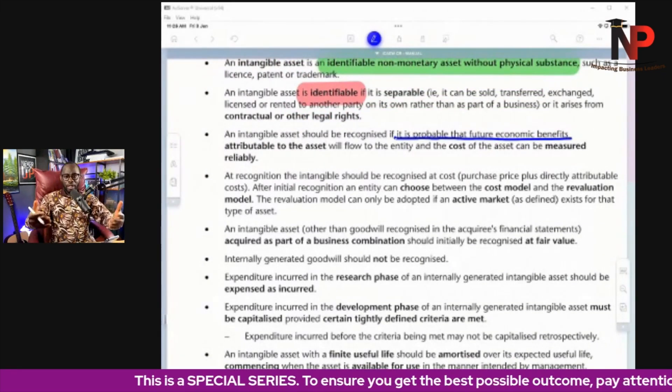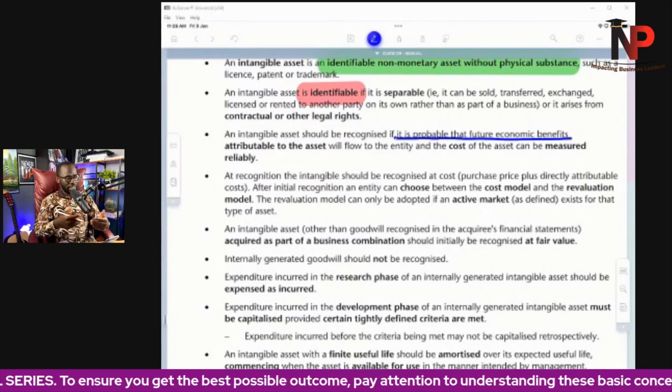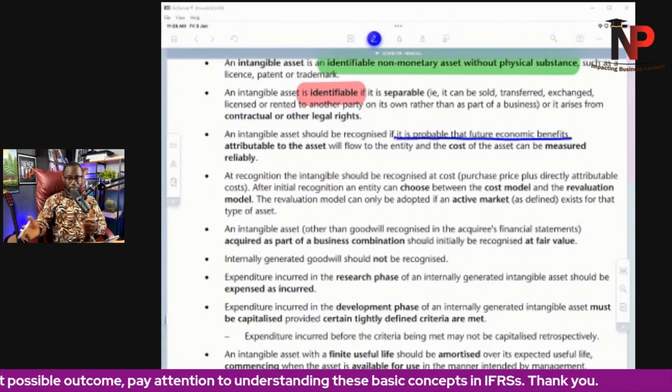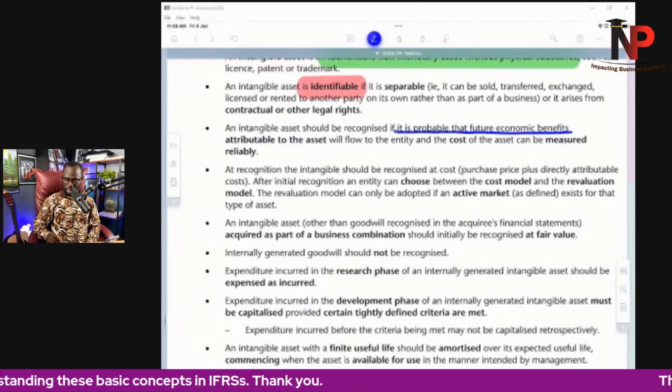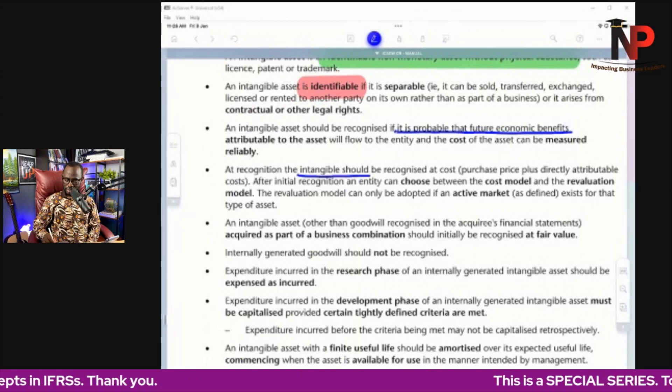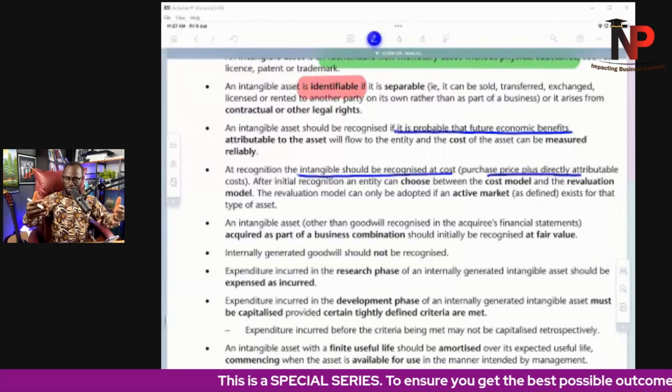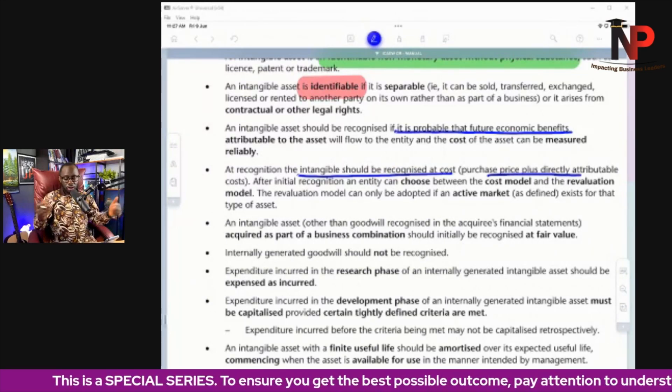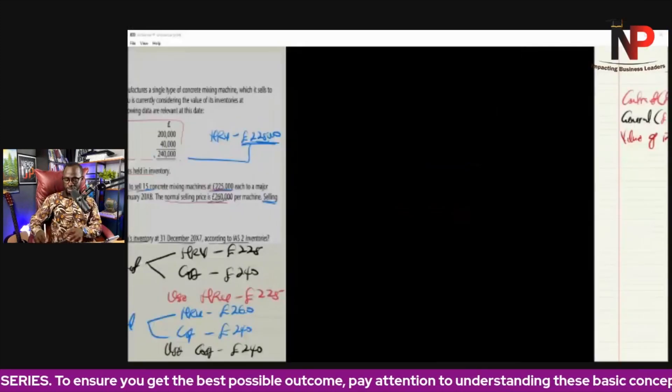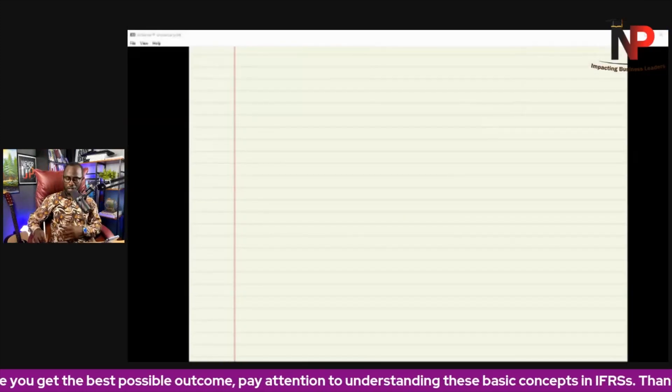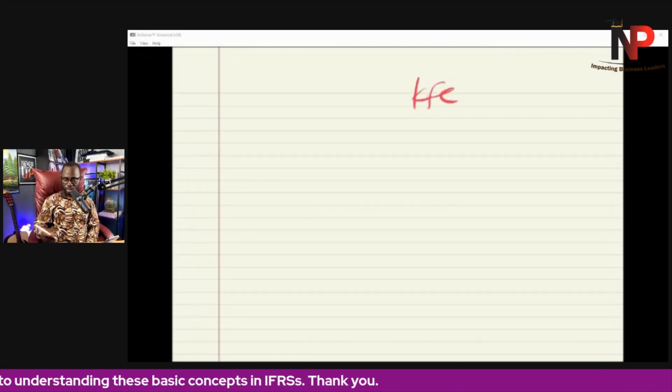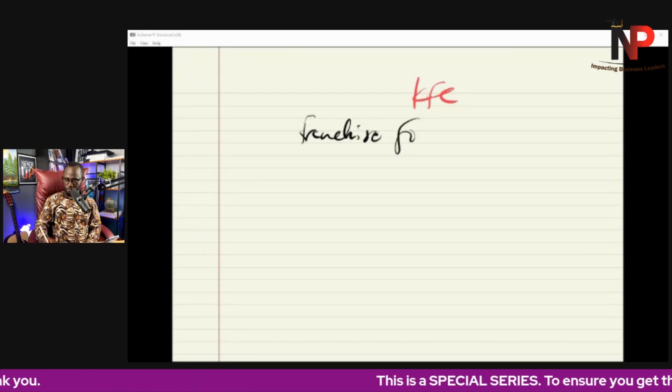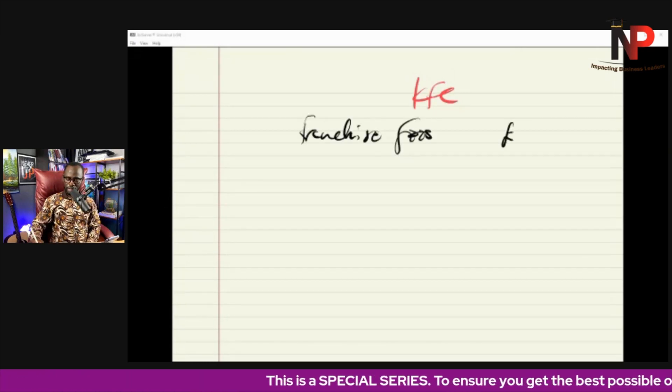So after the recognition criteria, how do we measure intangible assets? In other words, what is the initial measurement of intangible assets? The same thing we spoke about in IAS 16 will apply here. At recognition, the intangible asset should be recognized at cost, which is the purchase price plus directly attributable cost. So if we were acquiring a franchise, let's say we want to open an outlet of KFC, we go and buy the franchise. We pay the franchise fee.